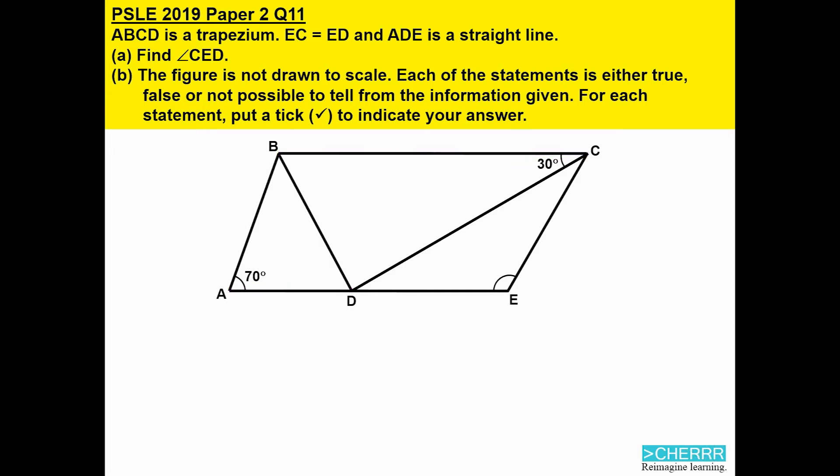Knowing that, the next thing we need to do is mark out EC and ED because they are equal. Now, using the property for angles between parallel lines, we will be able to tell that the two angles should add up to 180 degrees. To find angle ADC, I take 180 minus 30 degrees. I will get 150 degrees.